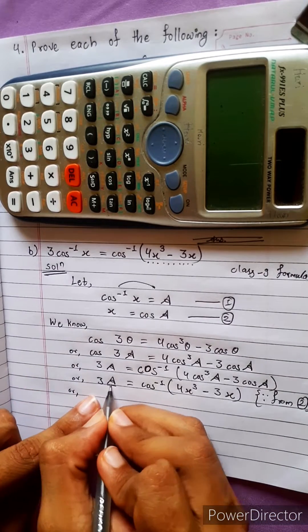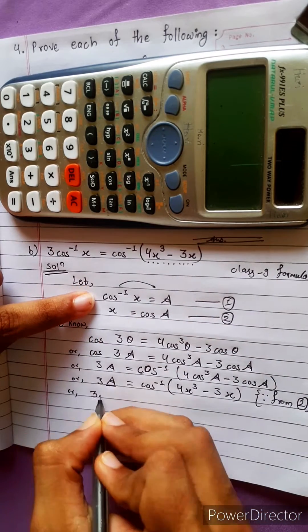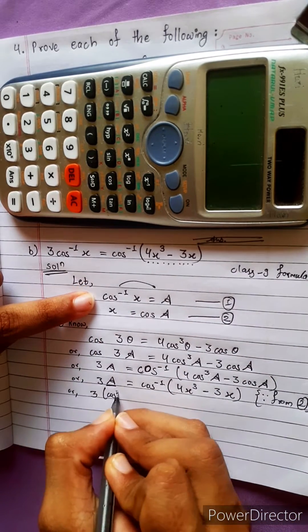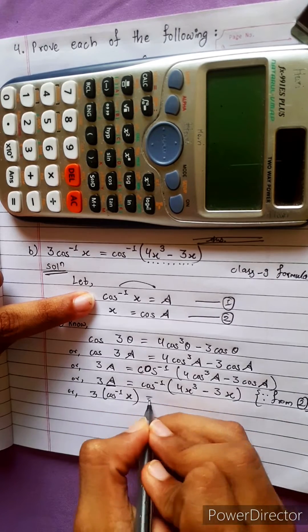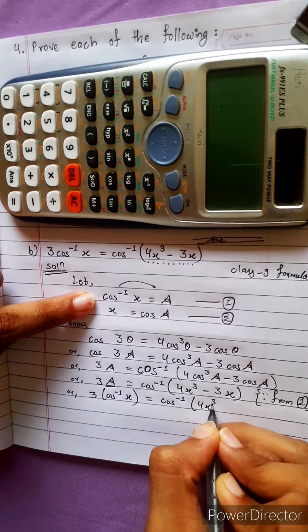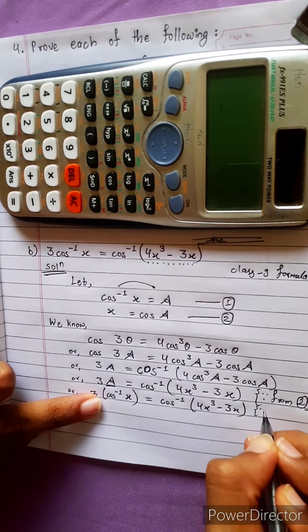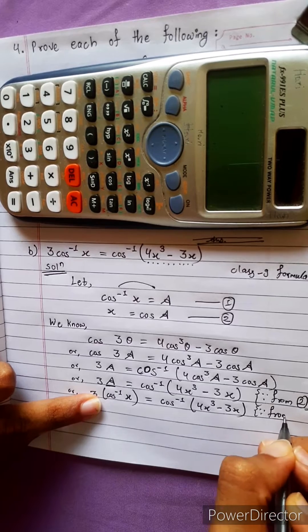Now what we can do: 3A. In place of A we put this, 3 times cos inverse x equals to cos inverse 4x cube minus 3x. And from where we got this? We got this from equation 1.